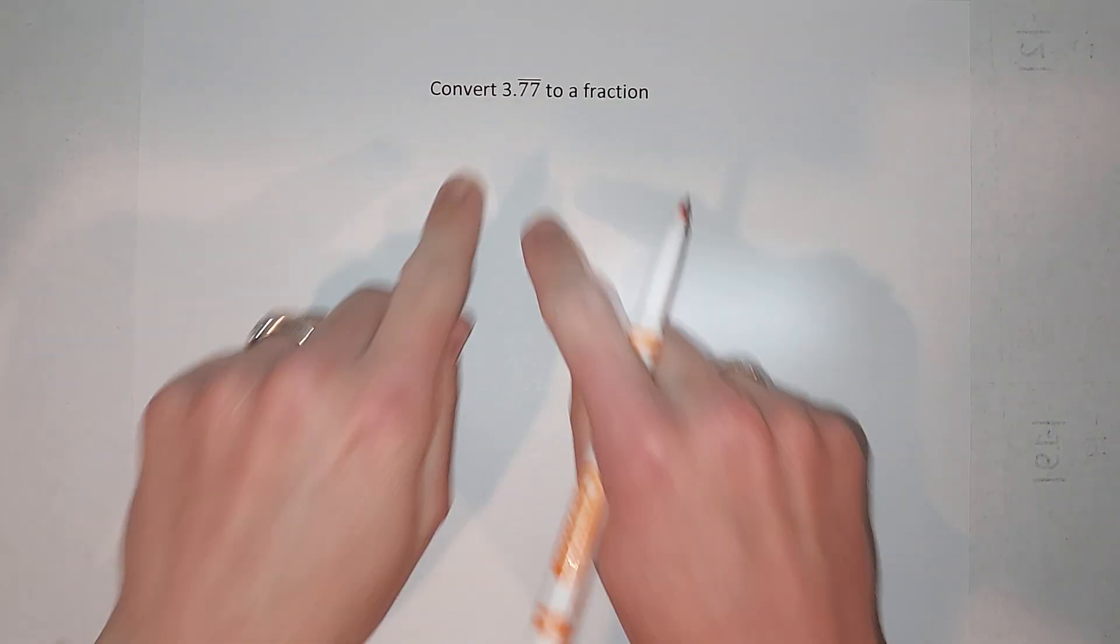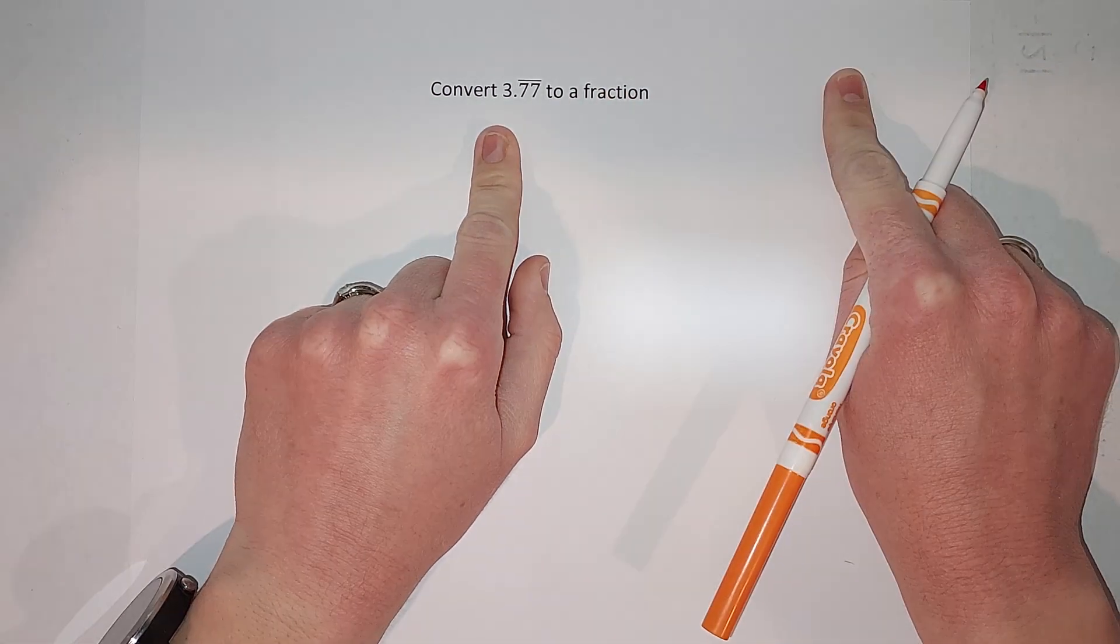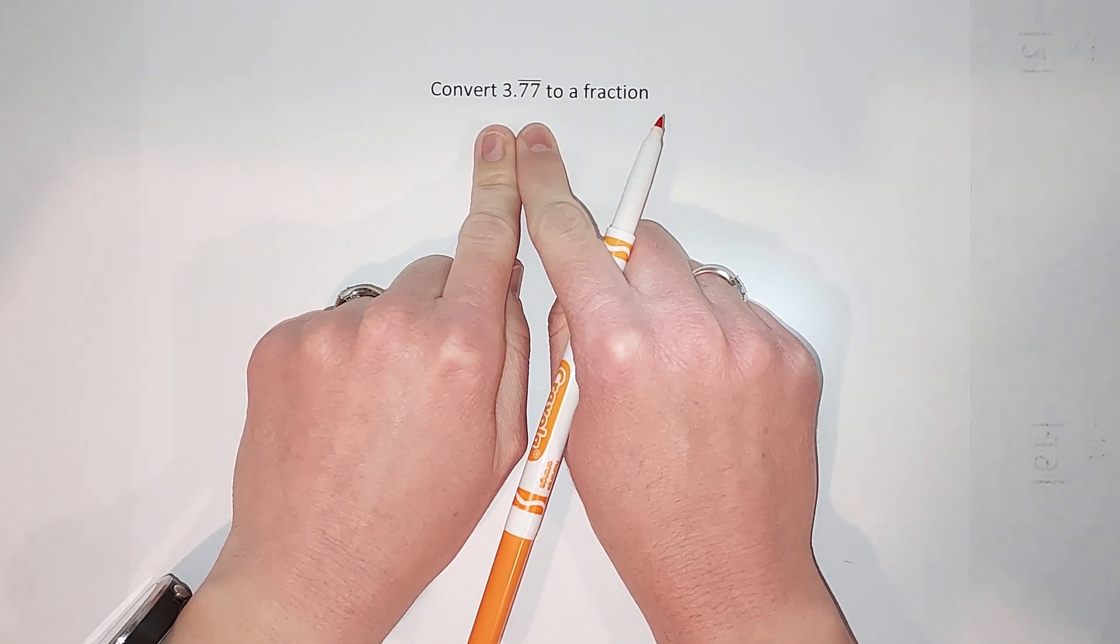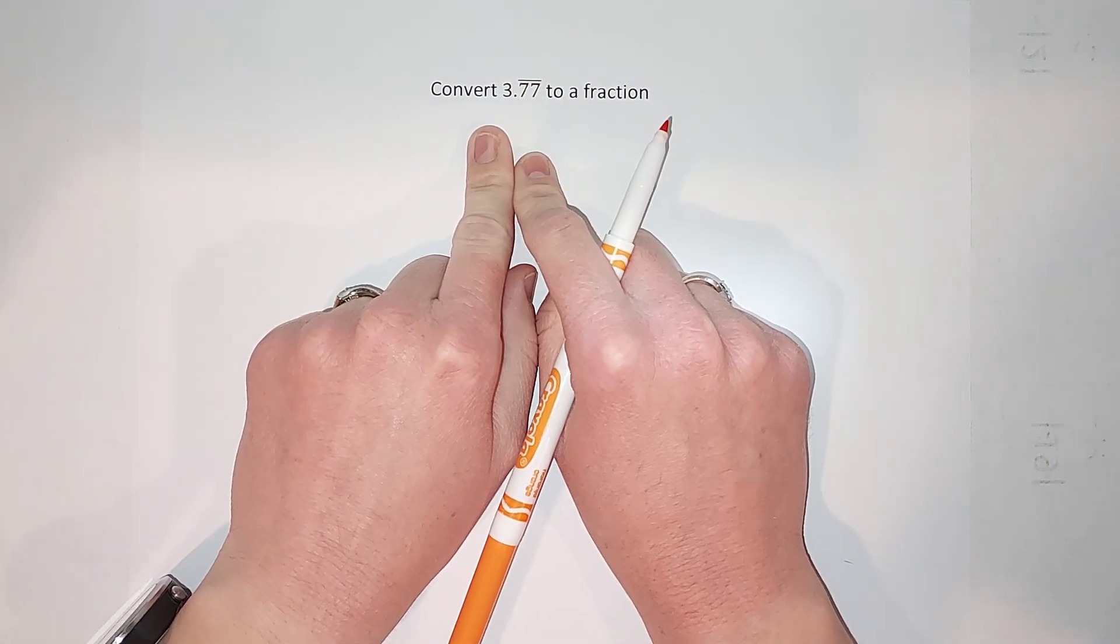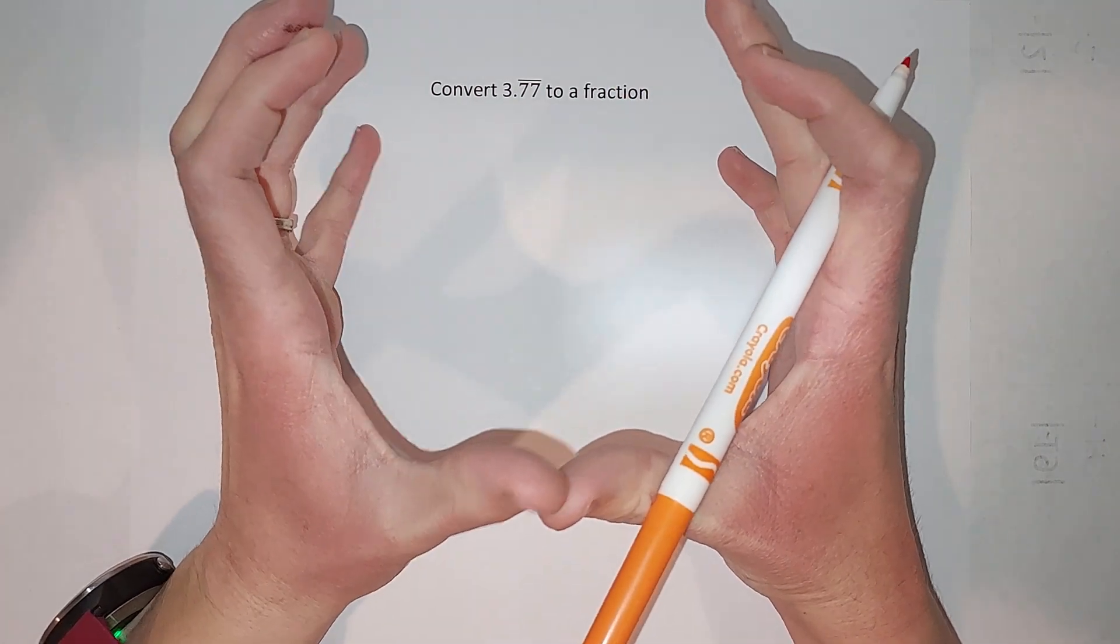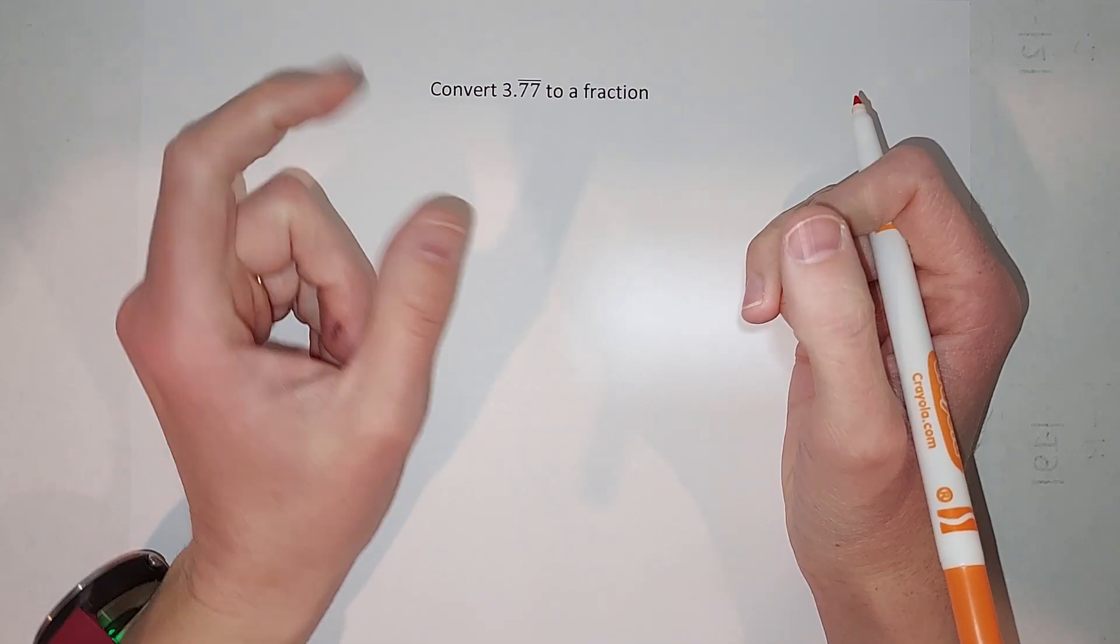Let's go ahead and figure out this guy. This line above the sevens means that the sevens just keep going—it's 3.7777 literally forever. That's why we have that line above there. Our normal ways of turning a decimal to a fraction aren't going to work because it goes on forever, it really does.